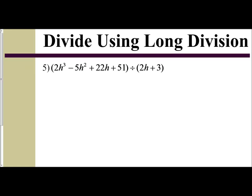Now let's apply all of our concepts with long division in this final example. We can see we're dividing by 2h plus 3, and then I'm going to put my polynomial inside. I see exponent of 3, exponent of 2, exponent of 1, and 0 exponent, so I'm not missing any terms. I'm just going to write it as is: 2h cubed minus 5h squared plus 22h plus 51.